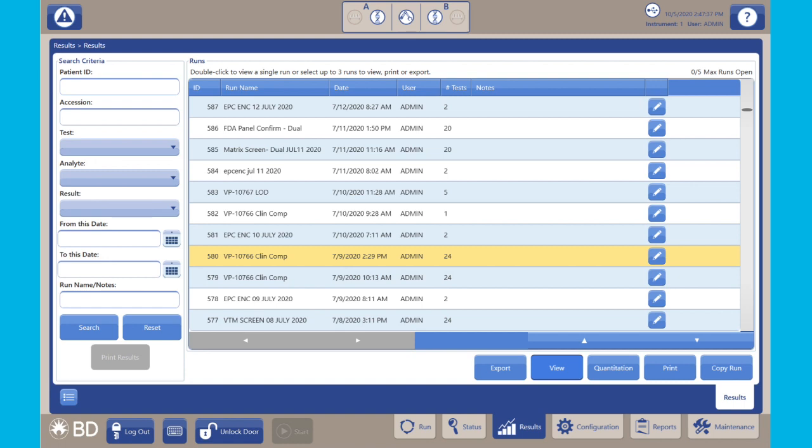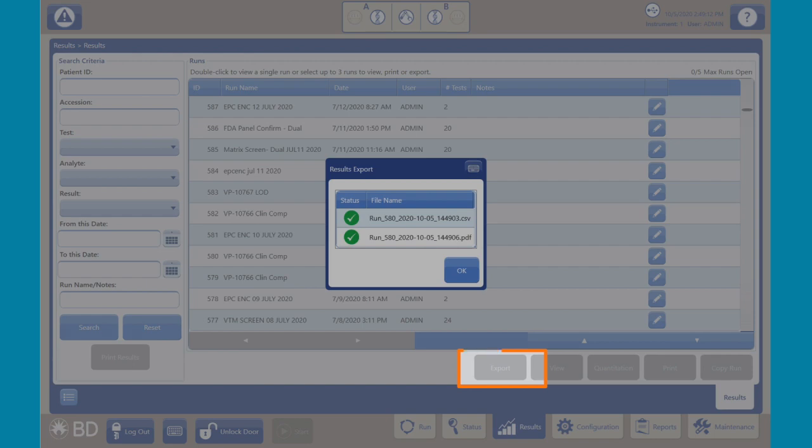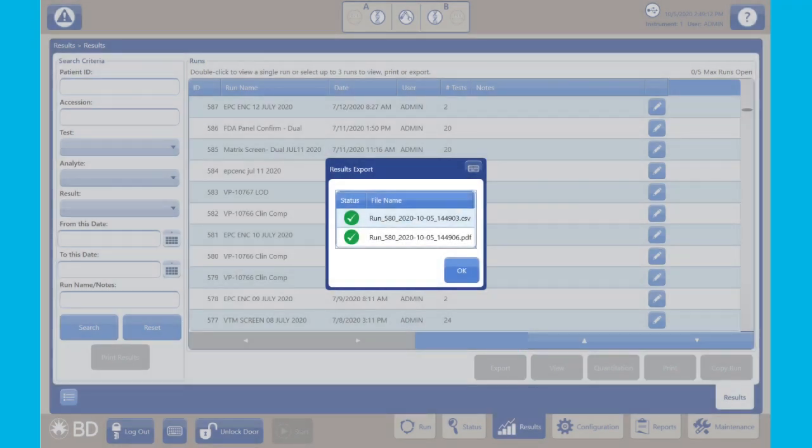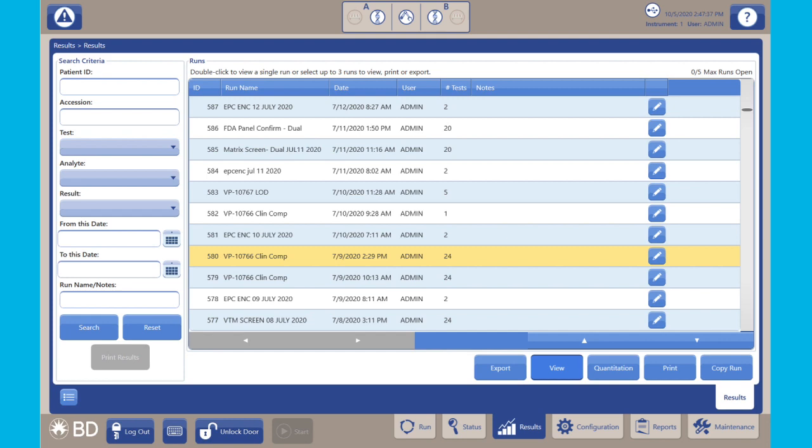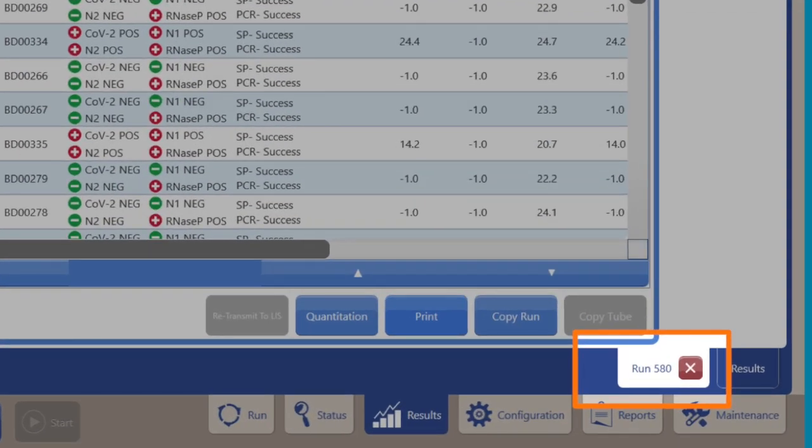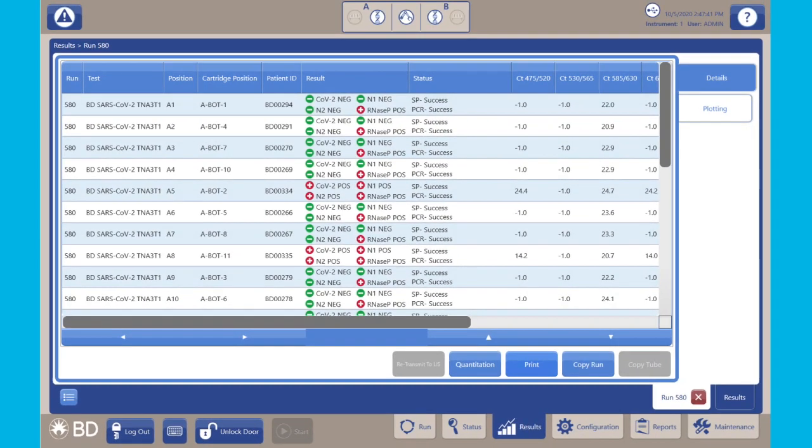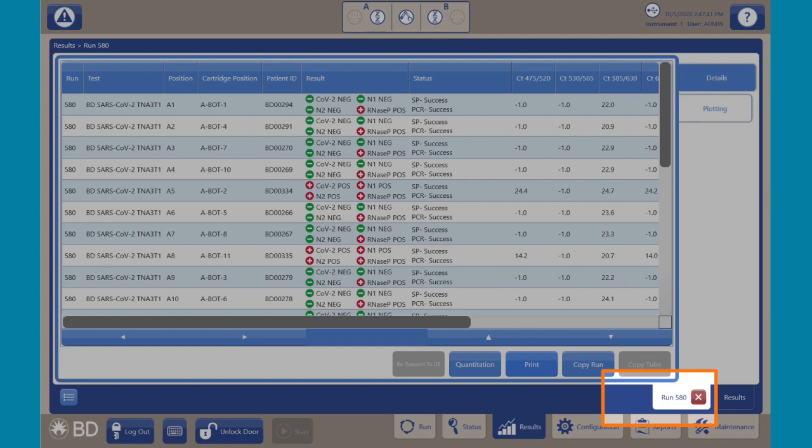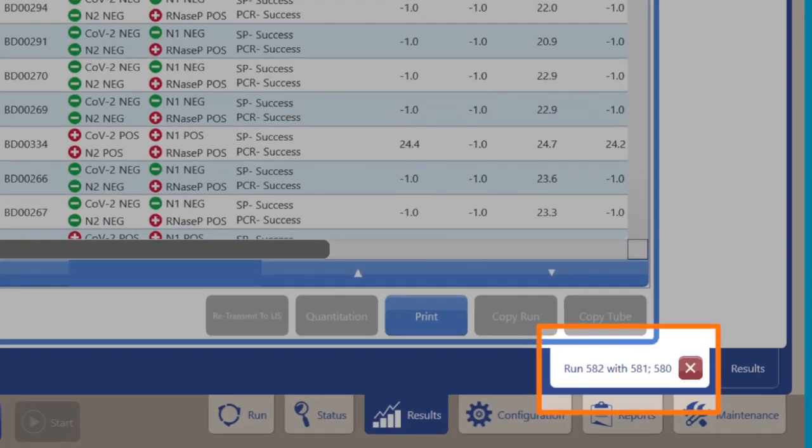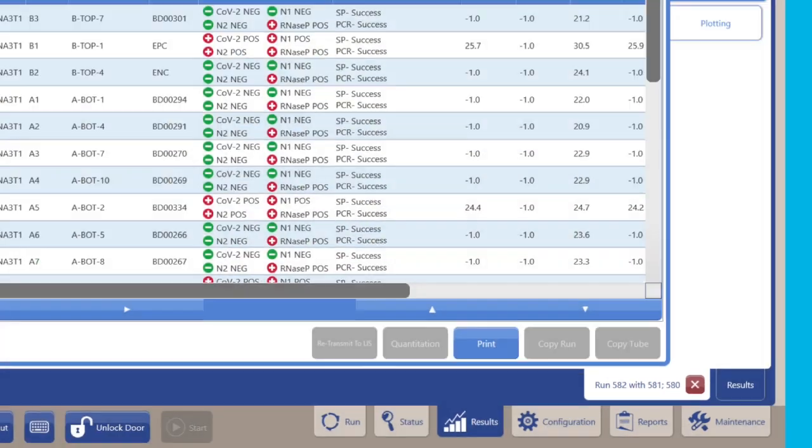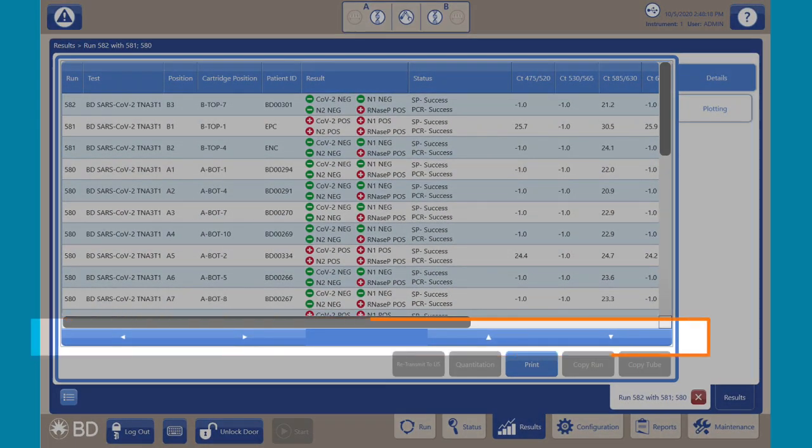When a run is selected, you can perform a variety of actions. The export operation exports results to a CSV file and copies a PDF file of the current run report. To view run results, double-click the desired run on the list display. A new button appears above the menu bar, labeled with the run number. For example, run X, where X signifies the run number. You can also open two or three runs in the same run window. Click the run button to open the run details display. You can open multiple run details displays and scroll through the list with the navigation buttons at the bottom left of the display.